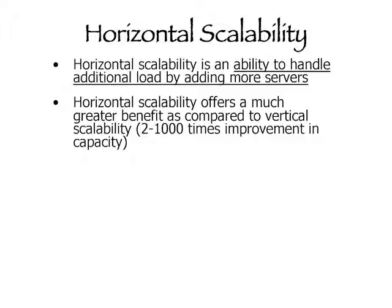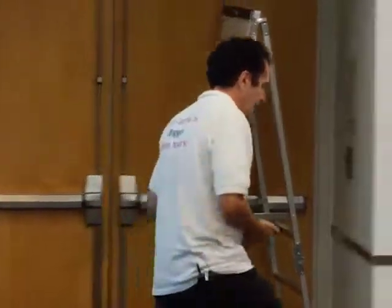Horizontal scalability is essentially the ability to handle additional load by adding more servers. It's different from vertical scalability, which is handling more load by adding more resources to a single server — faster CPU, more memory, faster network cards, SSDs. Horizontal scalability gives much better benefit: you just keep adding servers. On a single server you can have 32 cores and 128 GB RAM. But what if you need 500 CPUs or a terabyte of heap? That's where horizontal scalability helps.